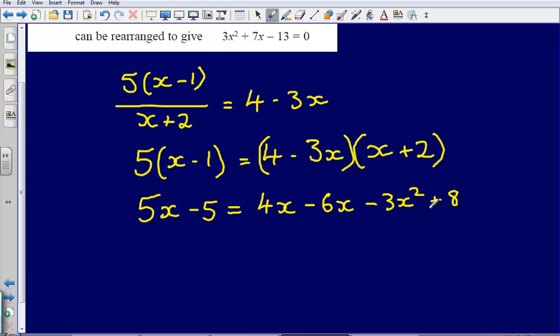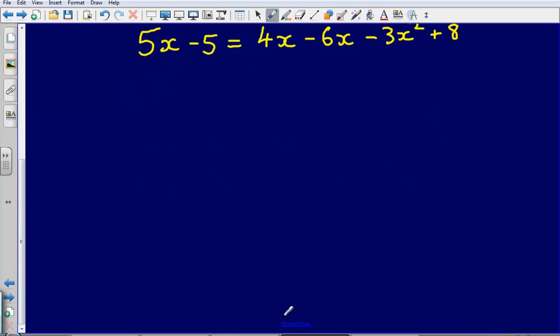So from this point on, this is starting to look a little bit more like what I need. Now the only thing, I need everything to equal 0. So I'm going to bring all of these terms over here. All of the terms on the right hand side, I'm going to bring them over to this side of the equal sign.